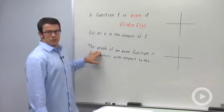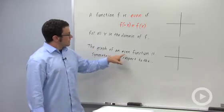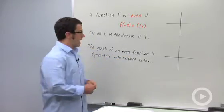Now, what kind of symmetry does that give us? Well, the graph of an even function is always going to be symmetric with respect to the y-axis.